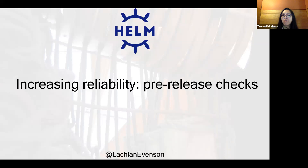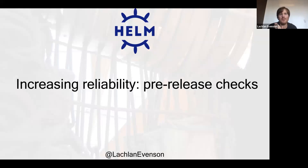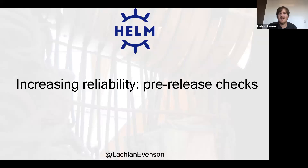Second question: how are the new library charts different from the previous method of using generic common charts with templates? Library charts are different in that they don't have a main function — they don't install resources onto a Kubernetes cluster or template a complete resource. They're blocks that you can insert from a library into other charts. A library chart doesn't install anything; it's just blocks that can be inserted into charts that import that specific library. The main usage is for common things like pod security policies — if you have a standard way to define them, you can change it in one library chart rather than changing it in every chart you have.